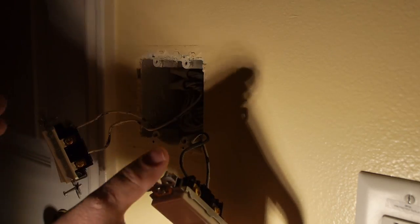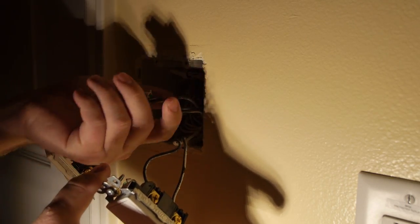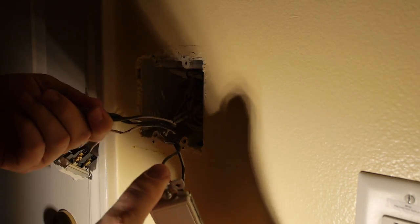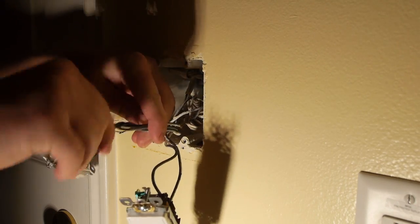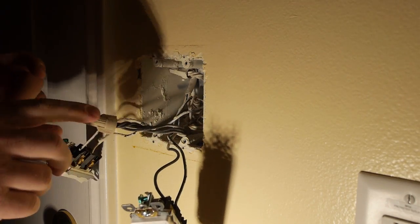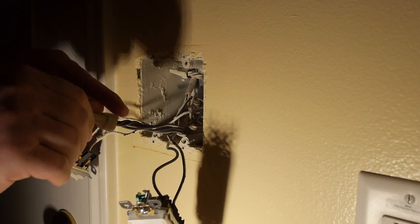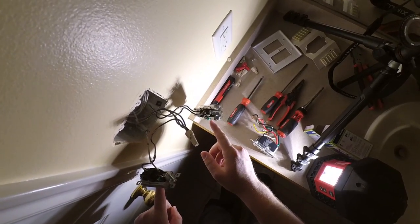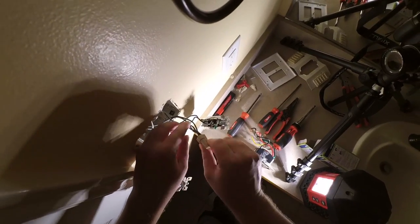So to make this work, these are all of the hots, right? They come into this wire nut and then they branch out into the switch. Then when you turn this on, it goes up to the light or up to the fan.